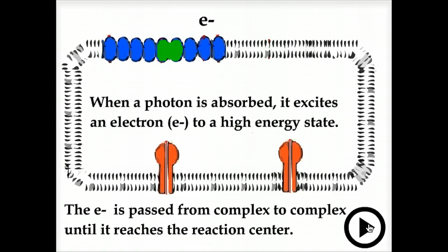When a photon is absorbed, it excites an electron to a high-energy state. The electron is passed from complex to complex until it reaches the reaction center.